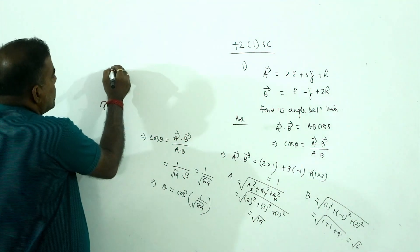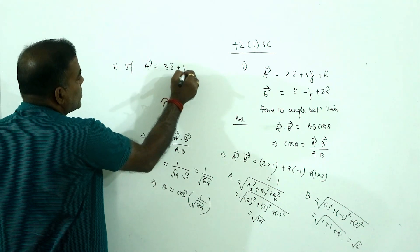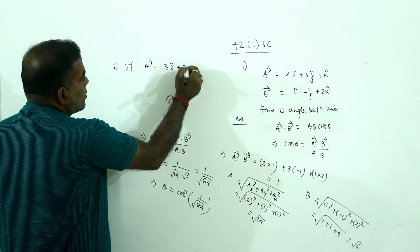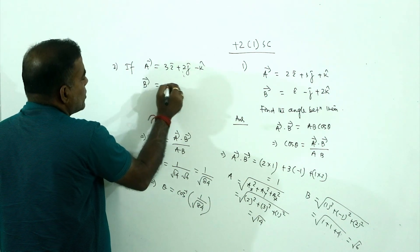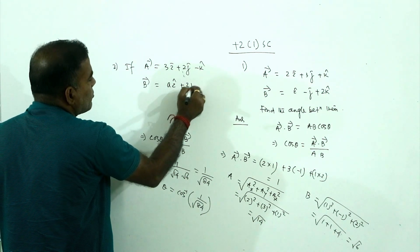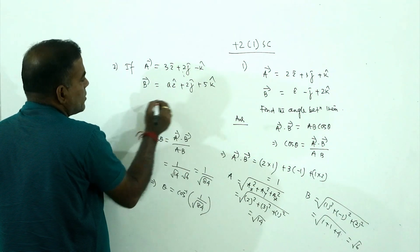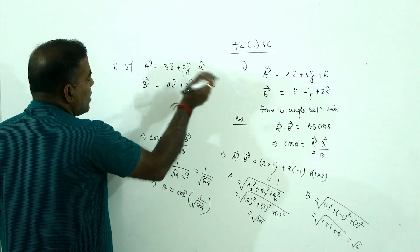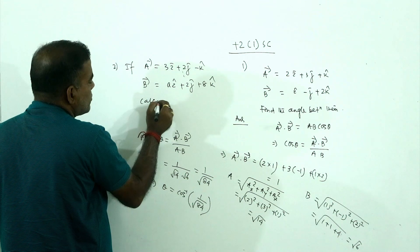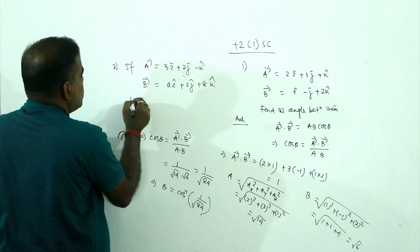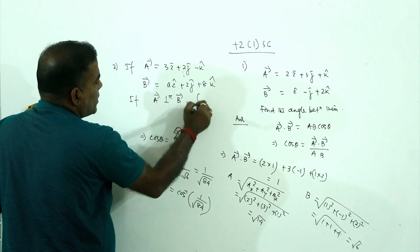Second question: if vector a equals 3i cap plus 2j cap minus k cap, and vector b equals ai cap plus 2j cap plus 5k cap, and if vector a is perpendicular to vector b, find the value of a.